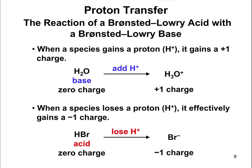You'll see problems asking for the conjugate acid or conjugate base of something. Remember: when something gains a proton, it gains the H and also a +1 charge. When something loses a proton, it loses the H and gains a −1 charge (or loses the positive charge). For example, HBr at zero charge loses H+, so it becomes −1. Conversely, adding H+ to H2O gives H3O+ — you add both the H and the charge.